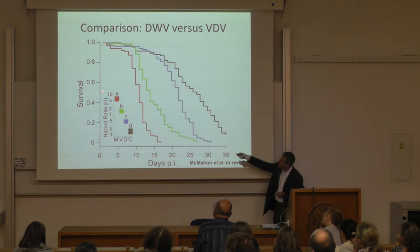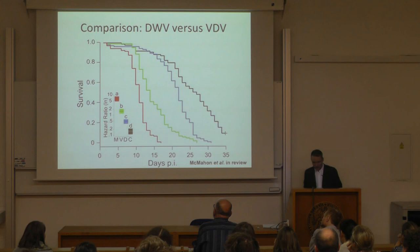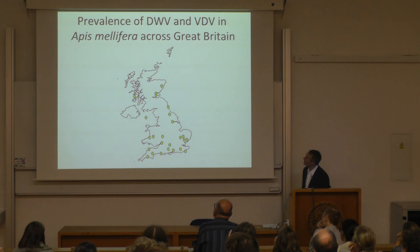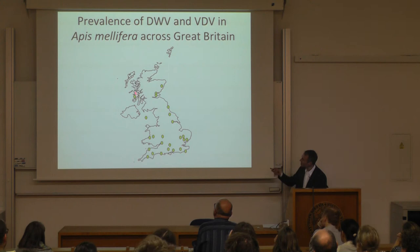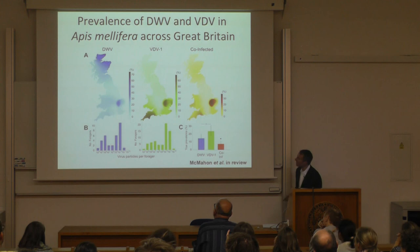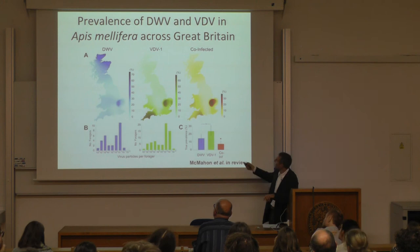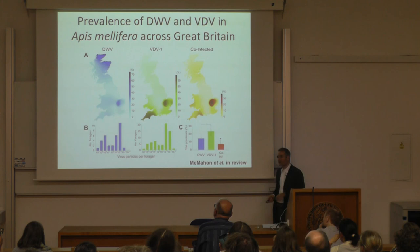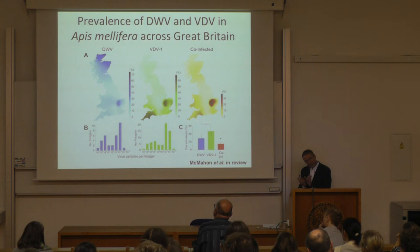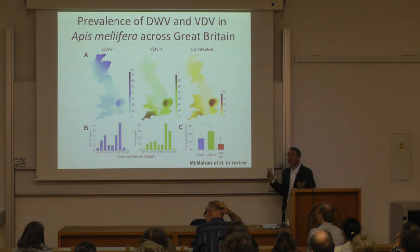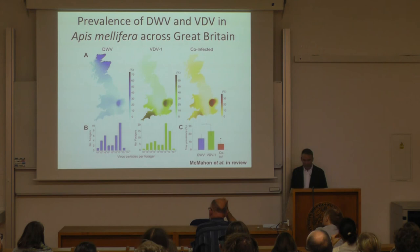Looking at distribution across the UK using colour maps showing DWV and VDV prevalence across Great Britain — the darker the colour, the more prevalent — we find VDV, first described only in 2004, is now quite widespread and particularly virulent in honeybees. We have data suggesting this VDV, a likely variant of DWV, has become a significant emerging pathogen.